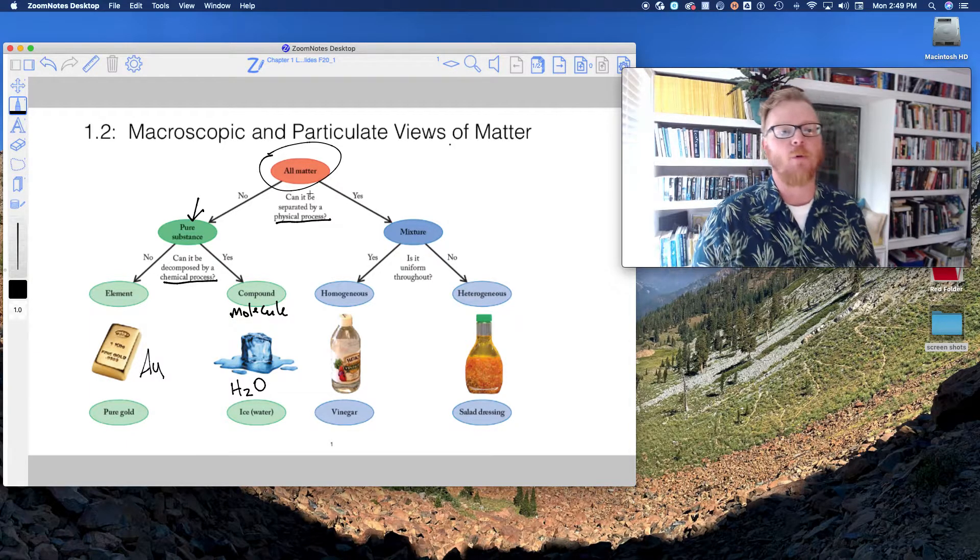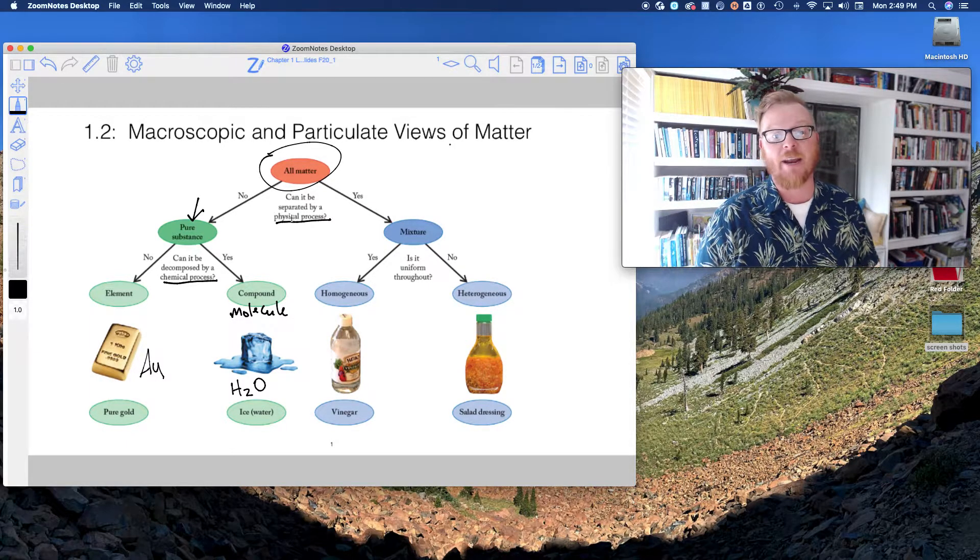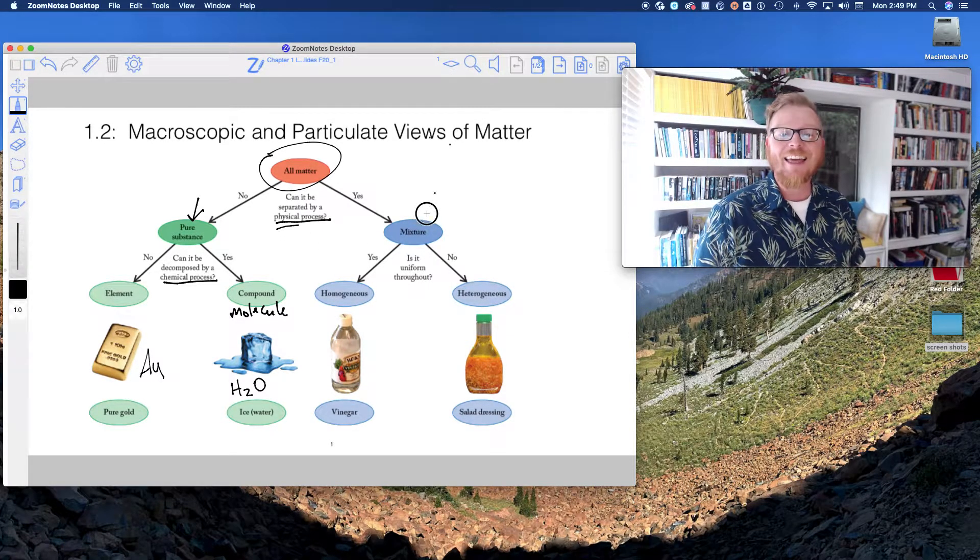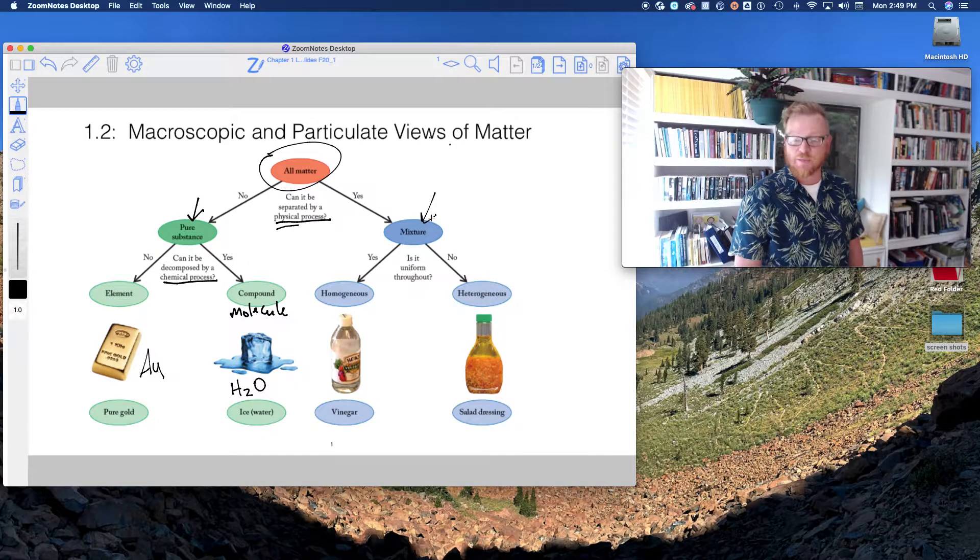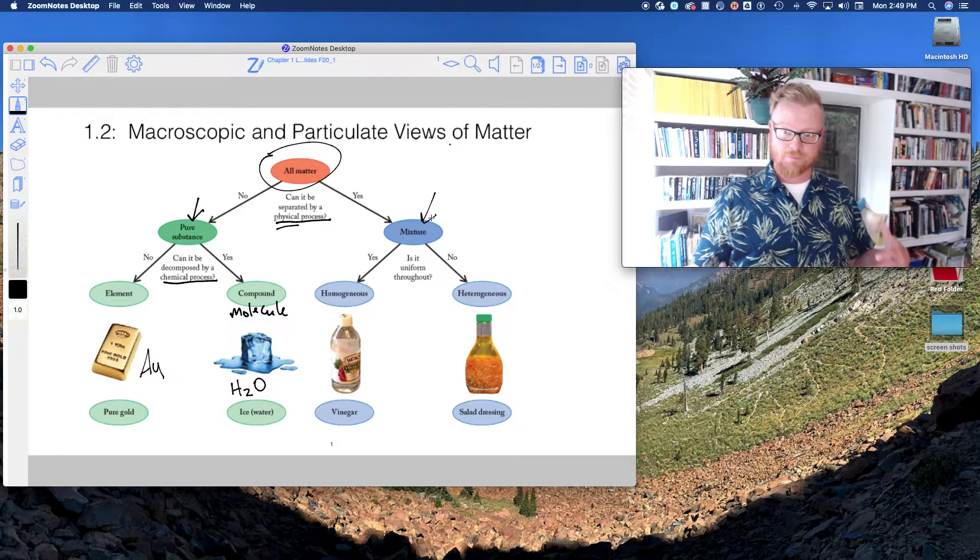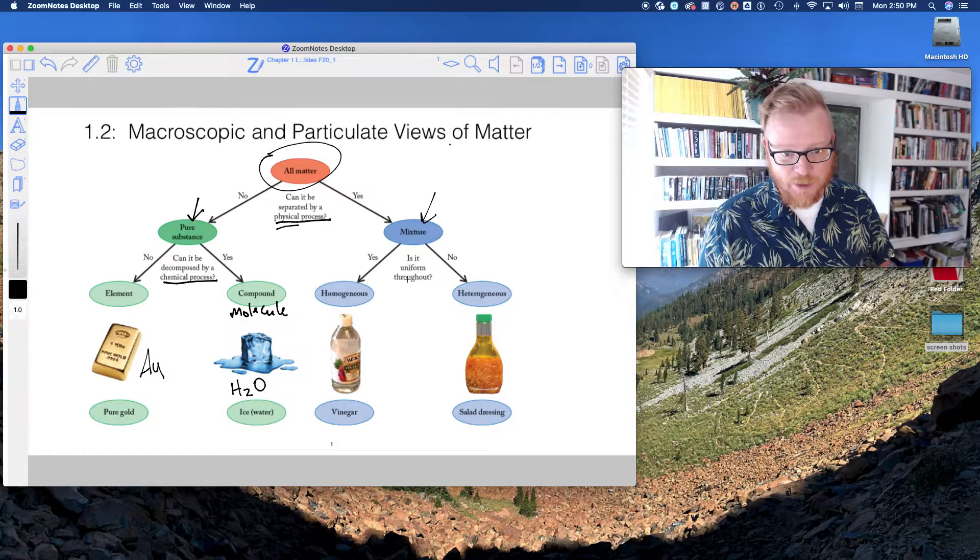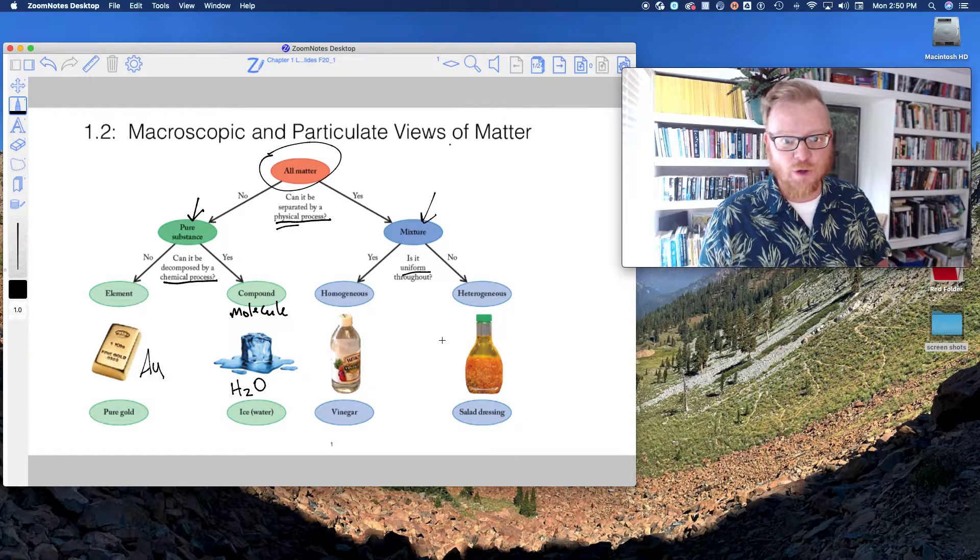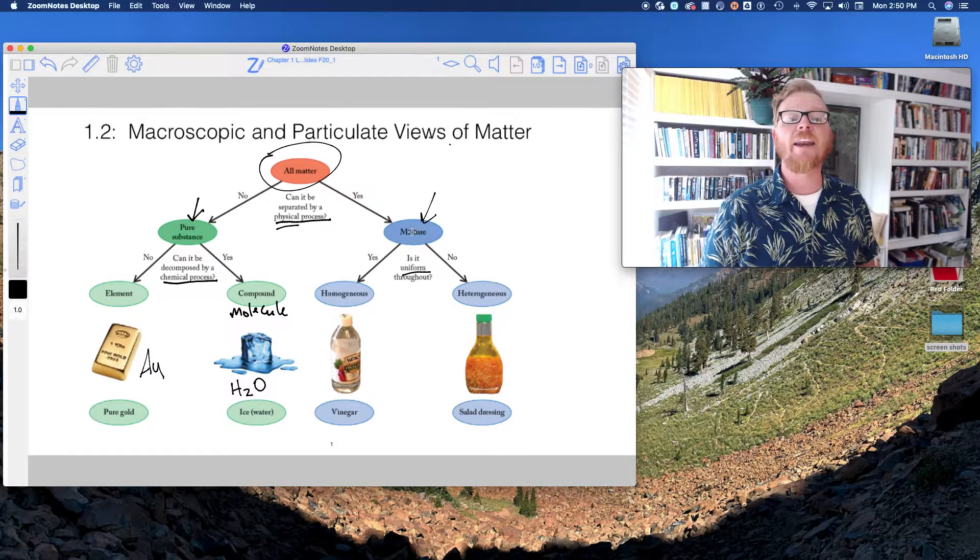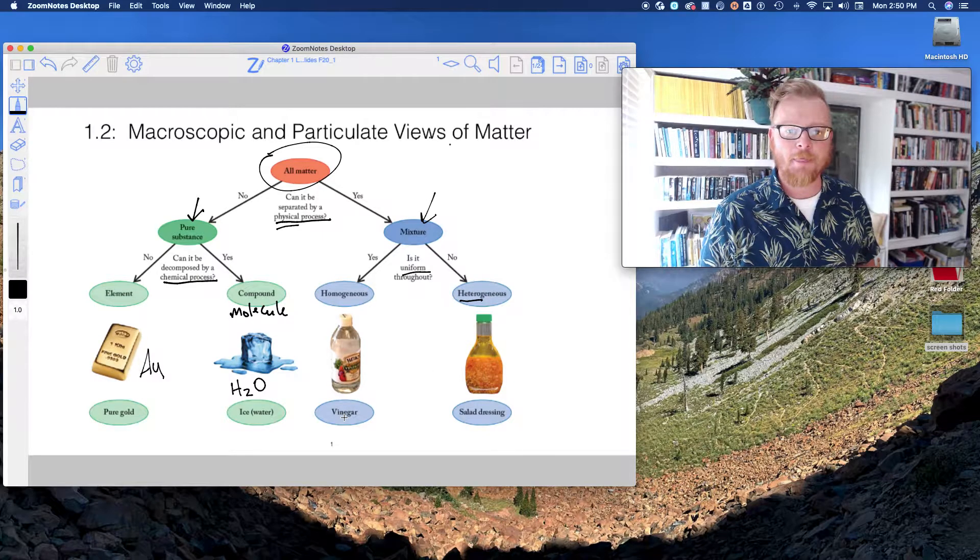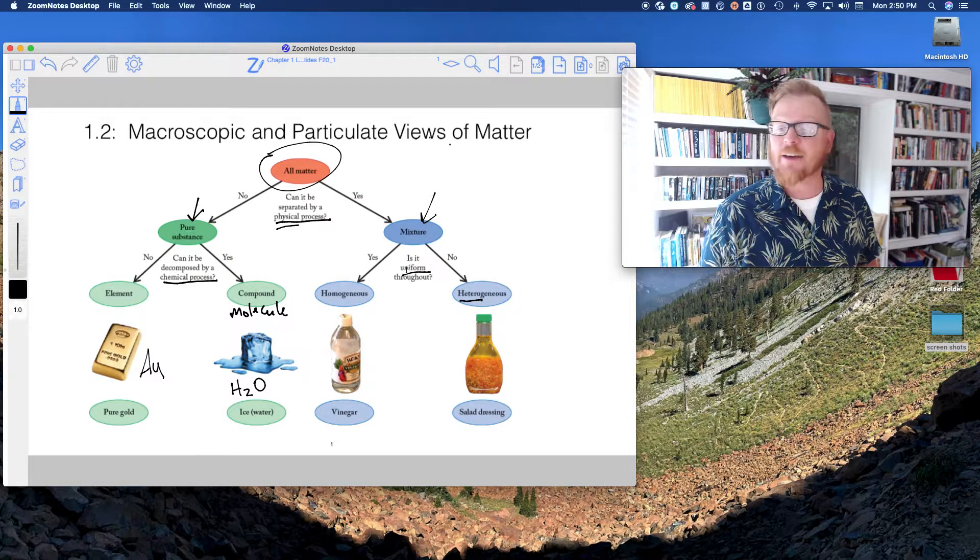So what if we go back to this top question: we have all matter, can it be separated by a physical process? If yes, then it's a mixture, which means it's more than one pure substance. And then we could go further and we could say, is it uniform? And if not, we call that heterogeneous. And if yes, if it is uniform, we call that homogeneous.